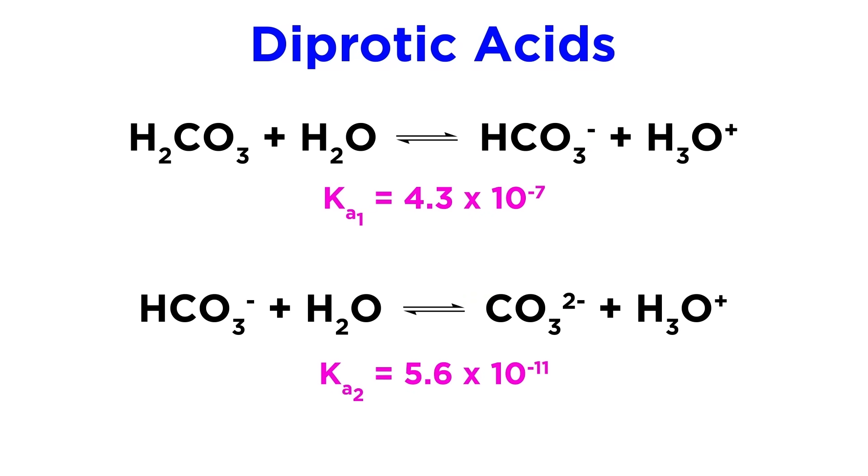Each of these deprotonations has its own associated Ka value, as the first proton is much more acidic than the second. Ka1 is 4.3 times 10 to the negative 7, while Ka2 is 5.6 times 10 to the negative 11.